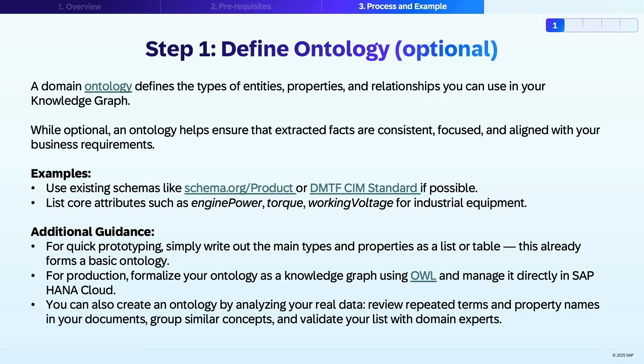Let's now look into each step of the process. Step one is about defining the ontology. An ontology is a structured definition of the key entity types, their properties, and the relationships between them in your business domain. It helps clarify what is most important for reporting and analysis. Defining an ontology is optional but highly recommended if you want your knowledge graph to deliver consistent and business-relevant results. To get started, simply list the most important properties and types.